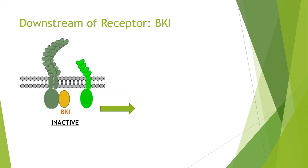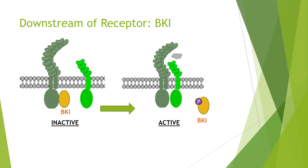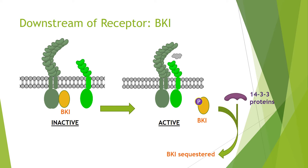Looking downstream of BRI1, we first look at BKI — the orange protein here. In the inactive state, BKI binds to BRI1, the main receptor, and competes with BAK1, preventing activation. However, once the BRI1 kinase is active when brassinosteroid is bound, BRI1 kinase will phosphorylate BKI, pushing it away from the membrane and away from competing with BAK1. The phosphorylated BKI then interacts with 14-3-3 proteins and is sequestered away, increasing activation of BRI1 kinase.